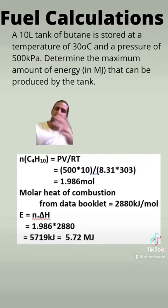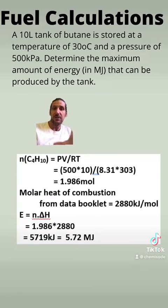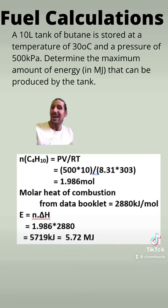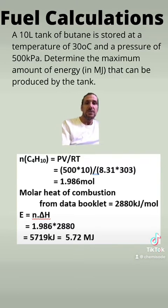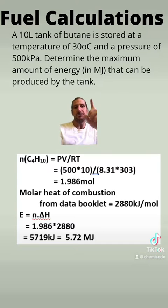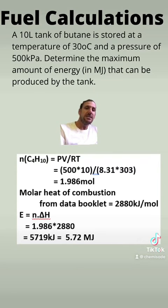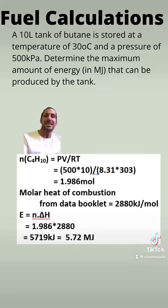So let's think about this question. There is no reference to how much energy can be produced by butane, but we know that in our data booklet there are some values for that. In the data booklet you are given energy per gram and energy per mole. So that means I either need to know the mass of butane or the moles of butane to work out the energy that can be released. Because butane is a gas, I'm going to use my gas equation to find the number of moles, and that's how we start this question.